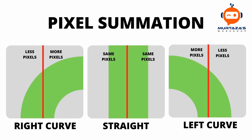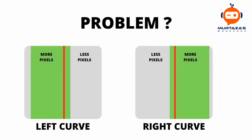Now this is straightforward, but let's look at where this will fail. It will fail when your image is not centered — when your path is actually not centered. You will have more pixels on the left hand side and less on the right, so it will say your curve is towards the left, but in reality it is actually going straight. And the same thing will happen on the right curve — you can see more pixels on the right hand side, so it will think that this is the right curve.